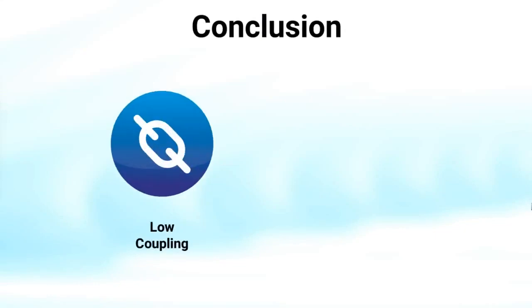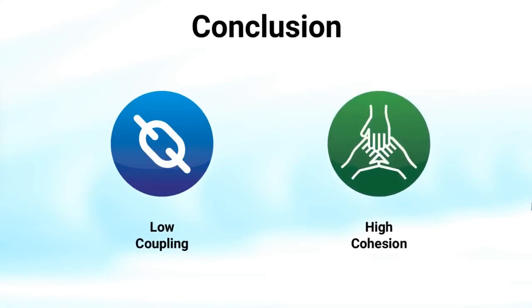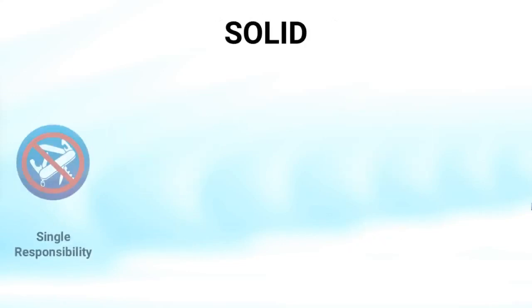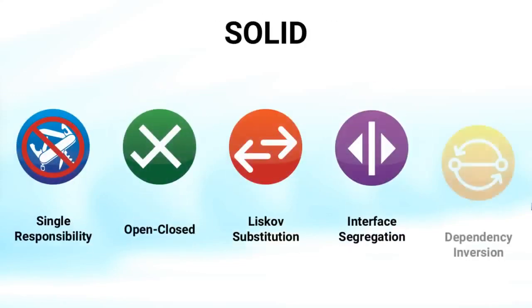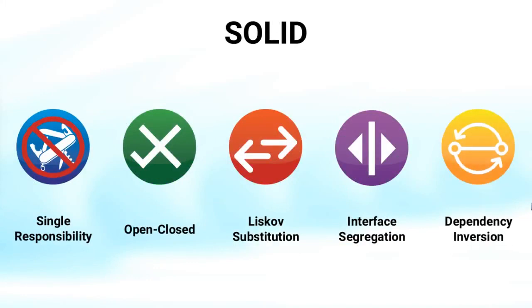When developing any software, there are two concepts that are very important. Coupling can be seen as the degree of dependence of a class, method, or any other software entity. Cohesion is when different parts of a system work together to get better results than if each part would be working individually. Coupling is usually present in a lot of code, and the optimal situation would be to have low coupling and high cohesion. With this brief introduction to the five SOLID principles, you must have understood that they help us achieve exactly that.